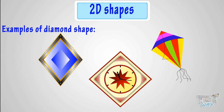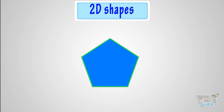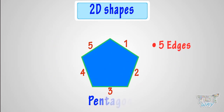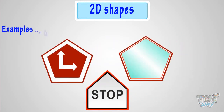We have learned all the four-sided polygons. Now we will learn polygons that have more than four sides. This is a polygon that has five straight sides, and it is called a pentagon. It has five vertices and five edges. These are some of the pentagon-shaped things.